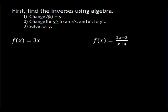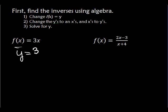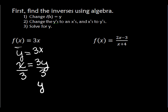Let's find the inverses using algebra. The first thing we do is change f of x to equal y, then swap the y's and x's, and then solve for y. So for f of x equals 3x, we write y equals 3x, then swap to get x equals 3y. Dividing both sides by 3, we get y equals x over 3. So the inverse function of f of x is f inverse of x equals x over 3.